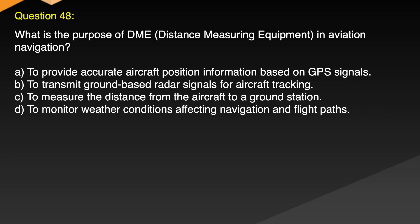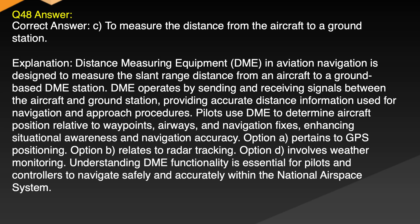Question 48. What is the purpose of DME, Distance Measuring Equipment, in aviation navigation? A. To provide accurate aircraft position information based on GPS signals. B. To transmit ground-based radar signals for aircraft tracking. C. To measure the distance from the aircraft to a ground station. D. To monitor weather conditions affecting navigation and flight paths. Correct answer: C. To measure the distance from the aircraft to a ground station.